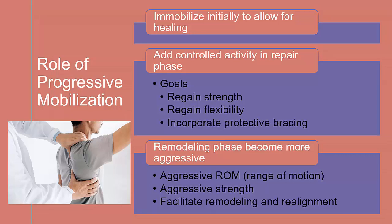The role of progressive mobilization. Initially, individuals must maintain some immobilization in order for initial healing to occur. As healing moves into the repair phase, controlled activity should be added. Our goal is to work towards regaining normal flexibility and strength. Protective bracing may be incorporated at this point in the rehabilitation. During the remodeling phase, aggressive range of motion and strength exercises should be incorporated. This helps to facilitate tissue remodeling and realignment. As a clinician, you must be aware of pain and other clinical signs, which can indicate that too much activity has occurred too soon. If that is the case, have your patient rest and then we start the process again.